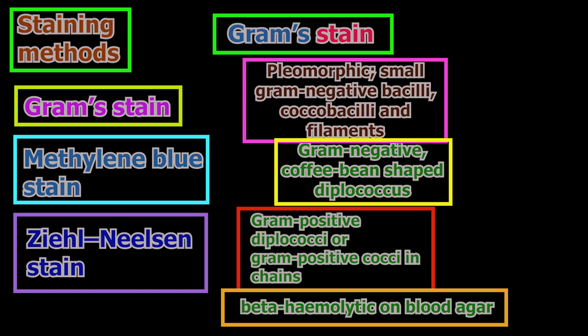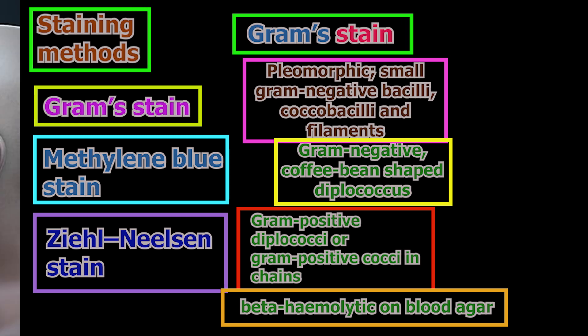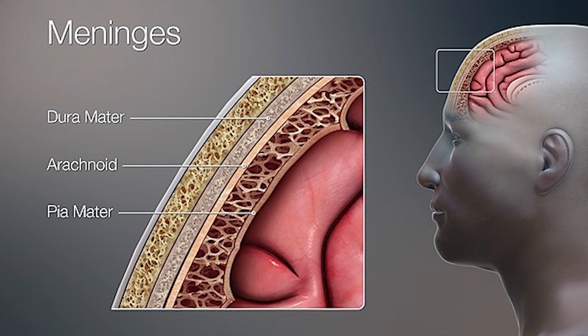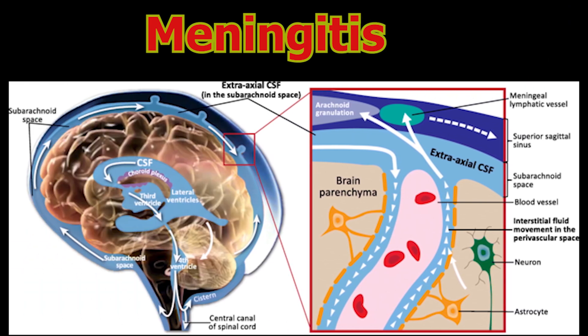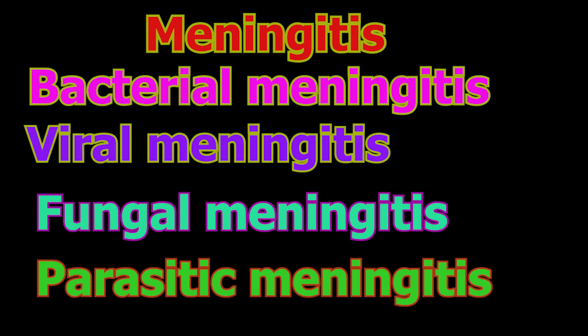Meningitis is acute or chronic inflammation of the protective membranes covering the brain and spinal cord, collectively called the meninges. The inflammation may be caused by infection with virus, bacteria, fungi, or parasites.